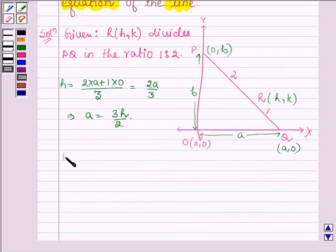And k is given by 2 times 0 plus 1 times B upon 3. This equals B upon 3, which further implies that B equals 3k.